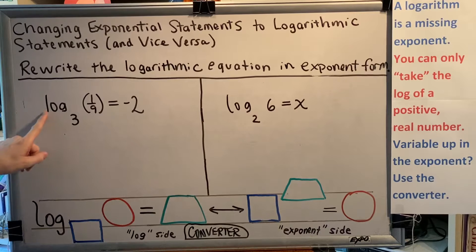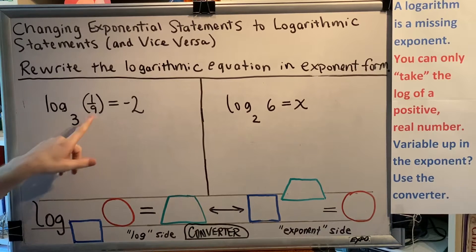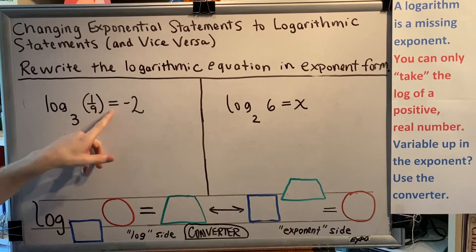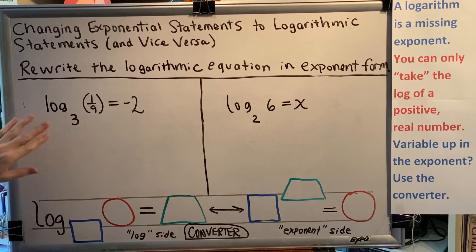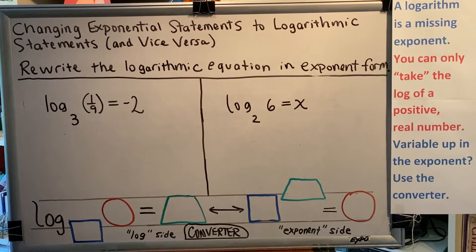Let's look at our first problem: log base 3 of 1/9 equals negative 2. 3 is the base and this is a logarithmic equation, so we start with the log side of our converter. The base goes in the blue box, so we put a 3 here.